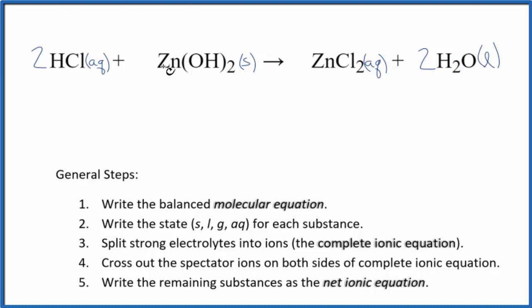So this is a neutralization reaction, we have an acid, and this is a base. They come together, we get a salt and water. Let's next split the strong electrolytes into their ions. That will give us the complete ionic equation.